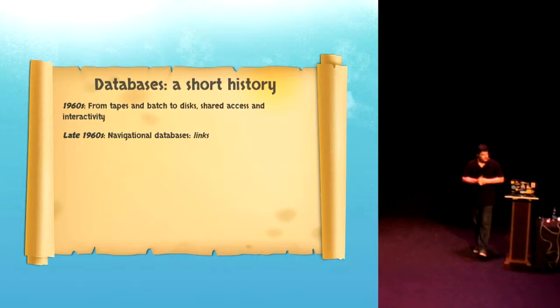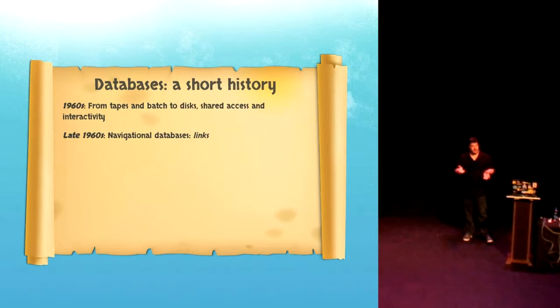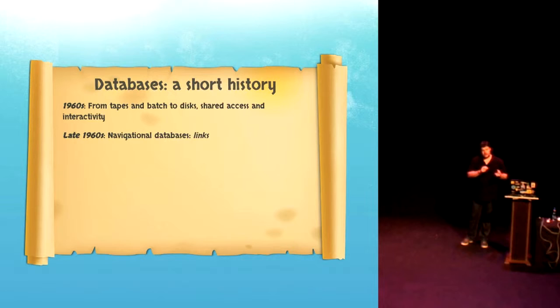The first databases were navigational databases. And you'll recognize this idea because it's still around, where each point in the database points to another component of the database. So it's all about links and you get to data by following the links through the database. You have to navigate to your content. XPath is a good example of a kind of a navigational concept today where you have to follow particular links to get to what you want. But this is not really enough because it's about the links, not the content.